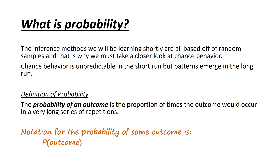We'll start by talking about what probability is. Inference methods that we're going to be learning are based on random samples. Therefore, we have to consider the idea of chance behavior — what would we expect to see? Chance behavior and random outcomes are unpredictable in the short run, but they do have predictable patterns in the long run. The probability of some outcome is defined as the proportion of times the outcome would occur in a very long series of repetitions.